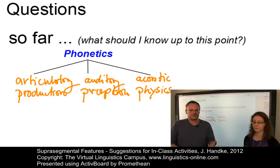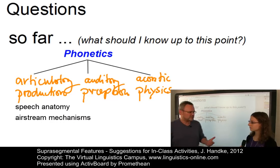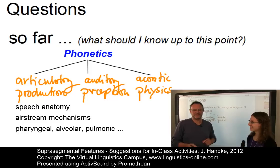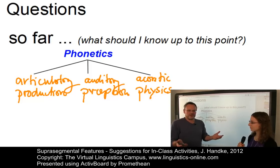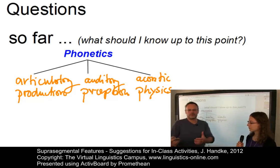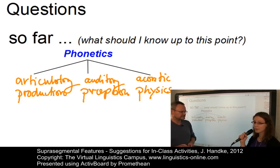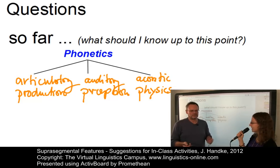The students should have an understanding of the basics of speech anatomy, of airstream mechanisms, so that terms like pharyngeal or alveolar or pulmonic airstreams are no longer unknown to them. You could ask, for example, what type of airstream is involved in all segments of speech? The pulmonic airstream. Or, do you know any non-pulmonic airstreams? There is the glottalic airstream, as in ejectives and implosives, and the velaric airstream, which we use mainly in clicks.